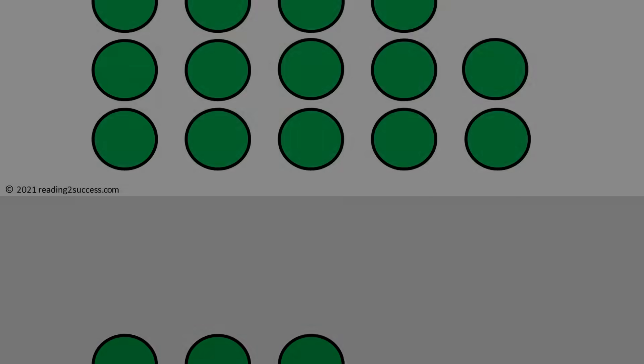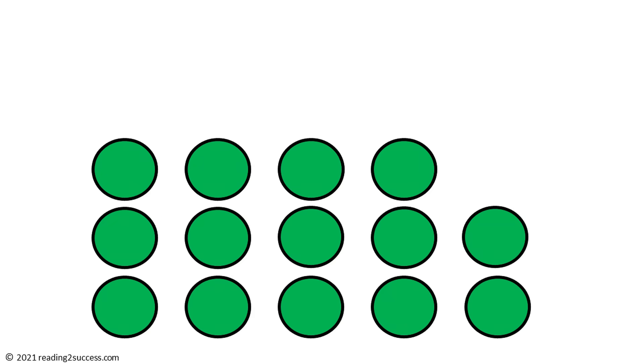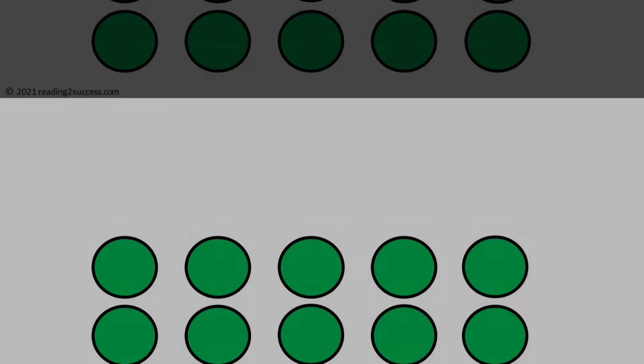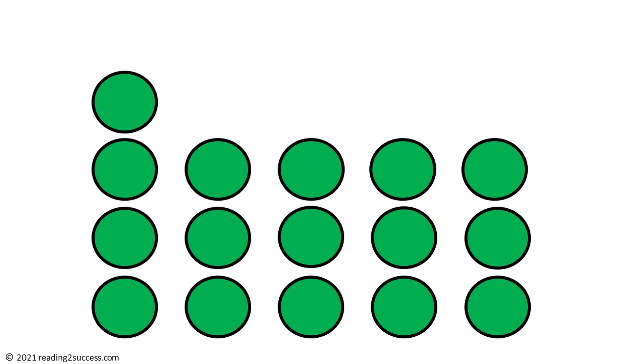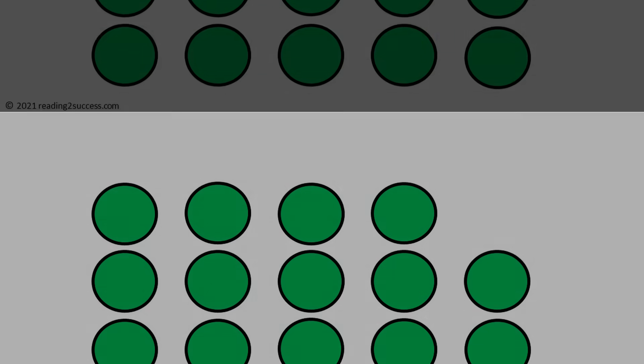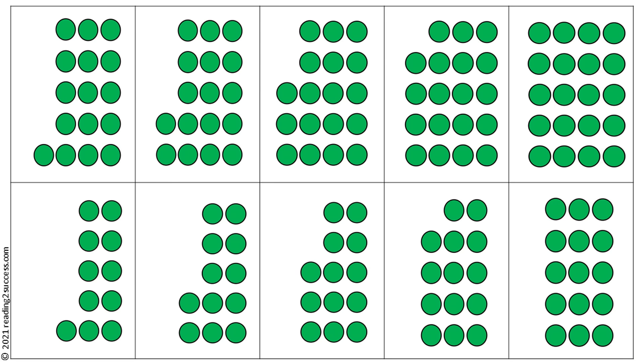11, 12, 13, 14, 15, 16, 17, 18, 19, 20. And again in random order so they actually recognize the amount and are not just memorizing them in counting order.